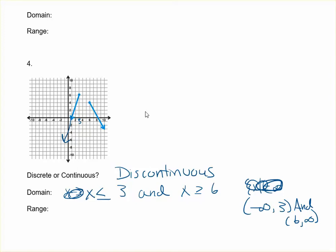There are different formats for writing domains, and either of those would be fine. For the range of this discontinuous function, the y values are never above six. This branch includes values down from four, so describing y as less than or equal to six covers all of them. You can also write it as negative infinity to six with a square bracket to include the point. The square bracket means to include that value. We don't also need to say y is less than or equal to four, because that's already included in y less than or equal to six.